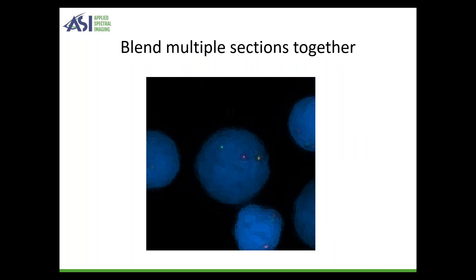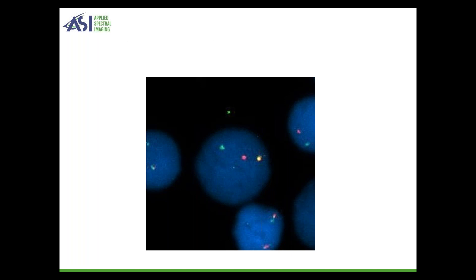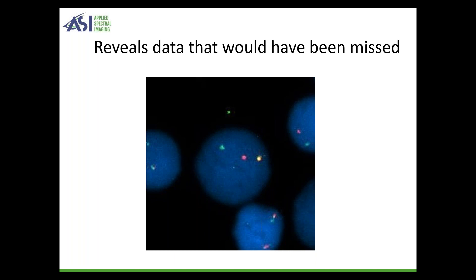We can also take these digitally and blend multiple sections together. At times if you're not doing a Z-stack, you may not get all the information present on your cell. By taking five or six different planes and blending them together, we can see a lot more information than if we had just taken one. Here we see a fusion with an additional two single probes that would have otherwise been very difficult to detect without having a Z-stack. This reveals data that would have otherwise been missed — very important for quantification of different types of FISH applications.